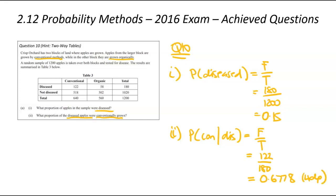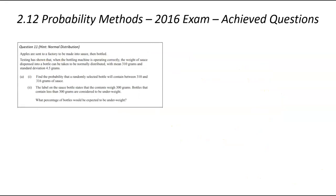I love these two-way table questions. Really easy way to get some really quick and cheap achieved marks in your exam. We're now up to question number 11. And this is the final question or final achieved question that came from the 2016 exam. Carrying on with the apple theme. Apples are sent to the factory to be made to sauce. They are then bottled. Tests are shown that when the bottling machine is operating correctly, the sauce weight can be normally distributed. That's the giveaway that you're looking at a normal distribution question. We've got a mean of 310 and a standard deviation of 4.5.